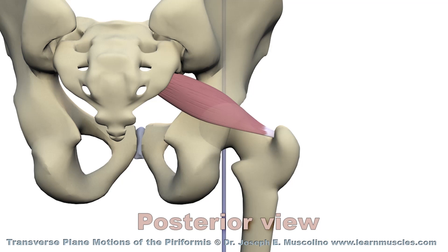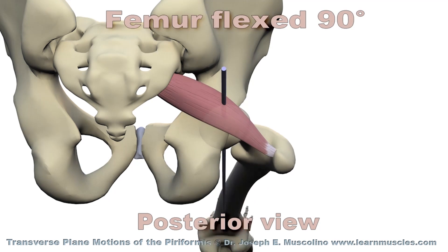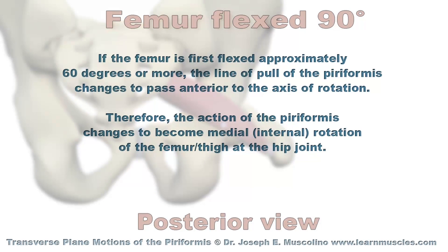Now we will have the femur flexed 90 degrees. If the femur is first flexed approximately 60 degrees or more, the line of pull of the piriformis changes to pass anterior to the axis of rotation. Therefore, the action of the piriformis changes to become medial, internal rotation of the femur or thigh at the hip joint.